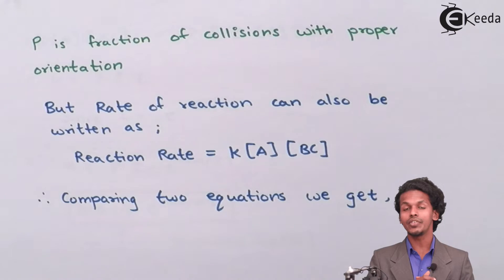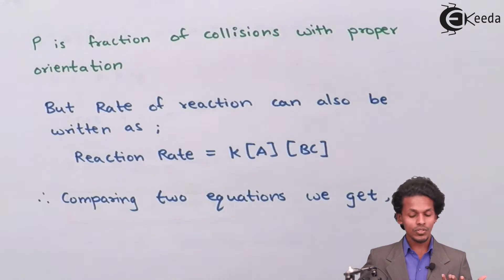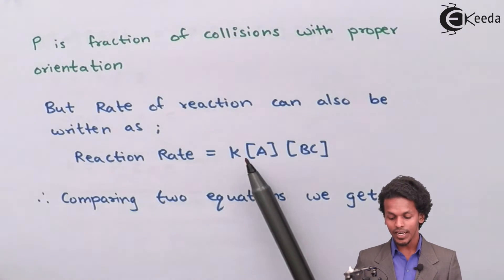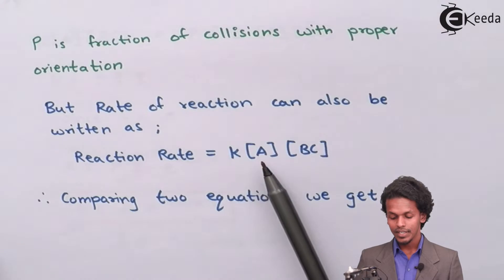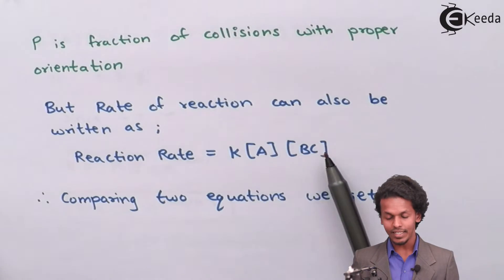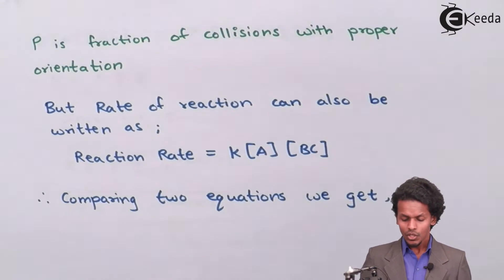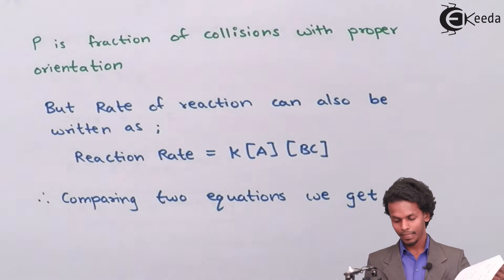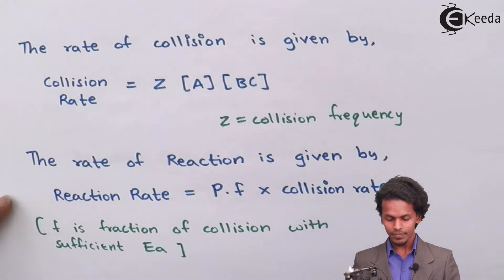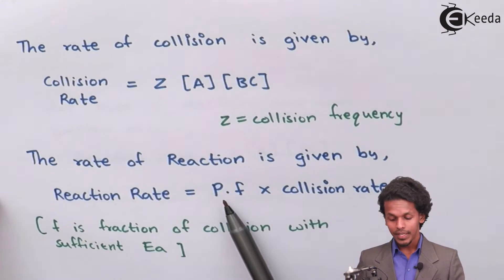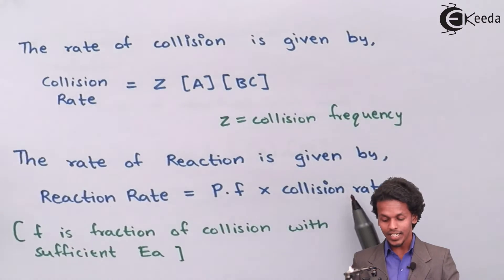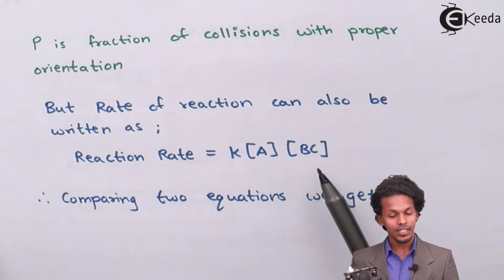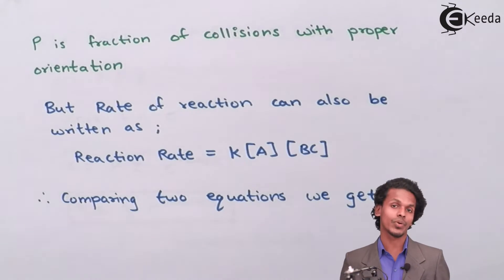They will collide with each other and only then will the formation of product occur. We also know that the rate of reaction can be represented as: Reaction rate equals K, the rate constant, into concentration of A into concentration of BC. So we have two expressions for reaction rate, and we are going to compare these two equations.